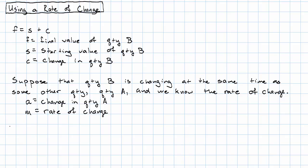Then, from the ratio equation, we know the change in quantity B is the rate of change times the change in quantity A.